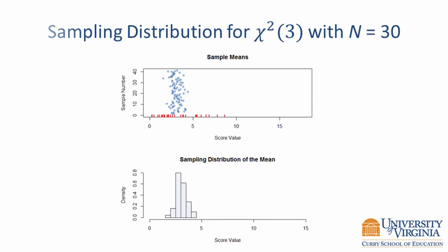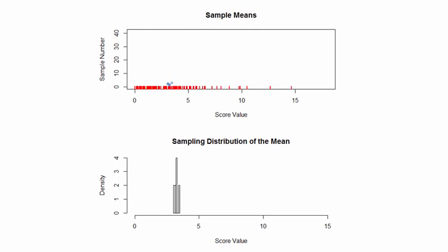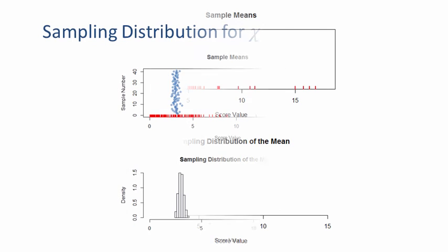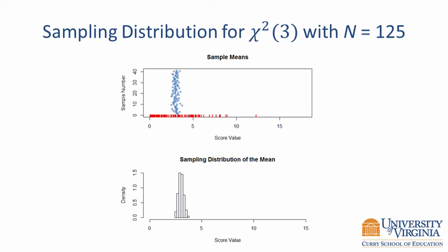Let's look at one final animation. This time, we will use a large sample of 125 observations. This sampling distribution is clearly bell-shaped, and we can have a great deal of confidence that it closely approximates a normal distribution. Because of the central limit theorem, we can safely use the normal distribution as the sampling distribution of the mean when the sample involves 30 or more observations. This is helpful because we don't need to know anything about the population distribution.